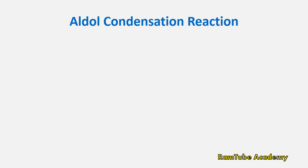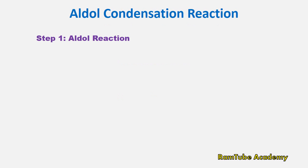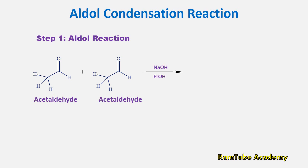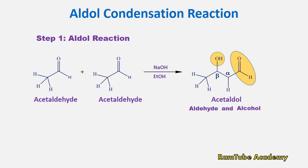The aldol condensation reaction proceeds through two steps: number one, the aldol reaction; number two, the elimination reaction. Step 1 — Aldol Reaction: demonstrated with acetaldehyde. Two molecules of acetaldehyde combine in the presence of base NaOH in solvent ethanol to form the product beta hydroxy aldehyde. The hydroxy group is present on the beta carbon. The actual name of the product is acetaldol, which contains two functional groups: aldehyde and alcohol — 'ald' from aldehyde and 'ol' from alcohol forms 'aldol.'